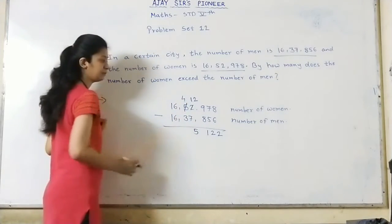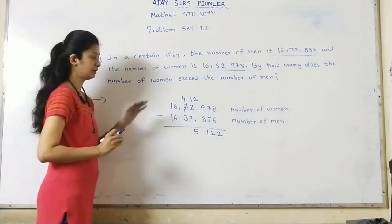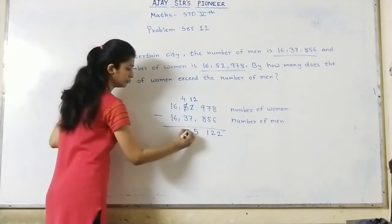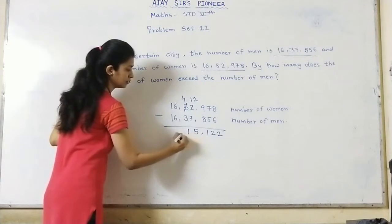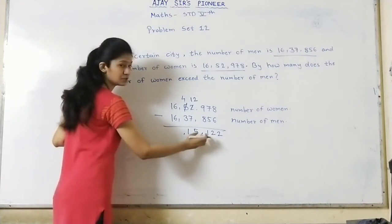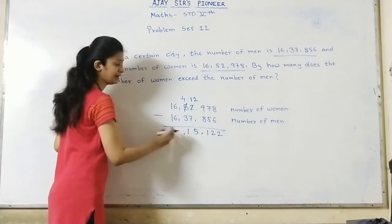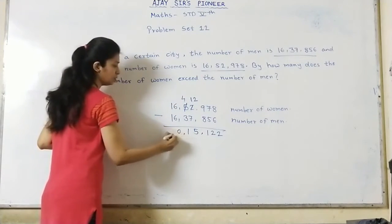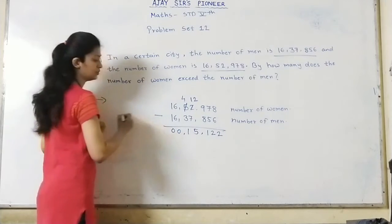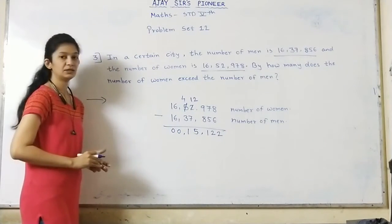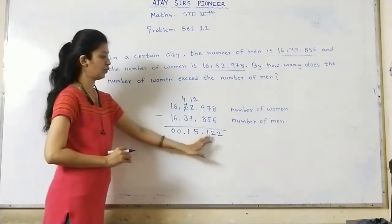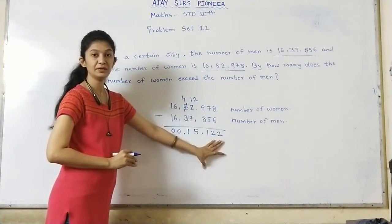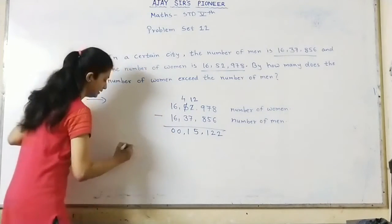Now 4 minus 3 in the ten thousand's place equals 1. Put the comma between thousand and hundred place and again between lakh and ten thousand place. 6 minus 6 equals 0, and 1 minus 1 equals 0. So the difference is 15,122. Let's write the answer.